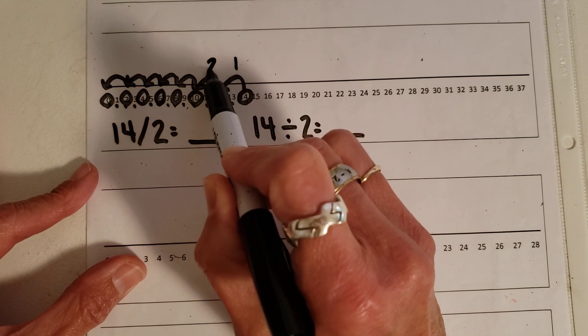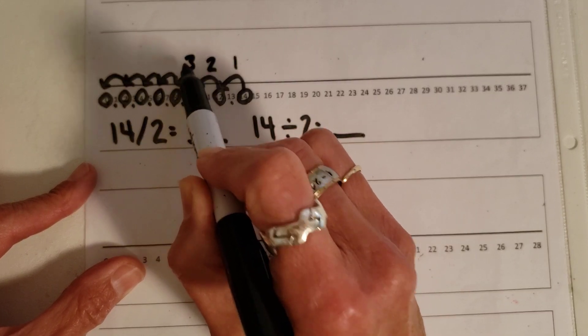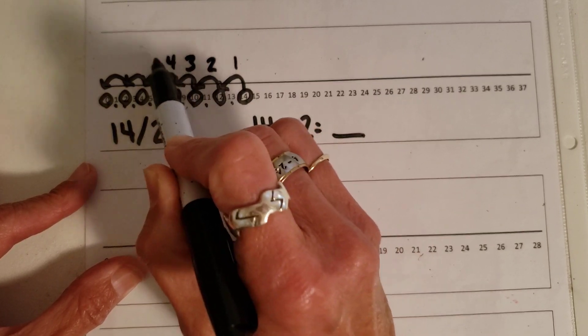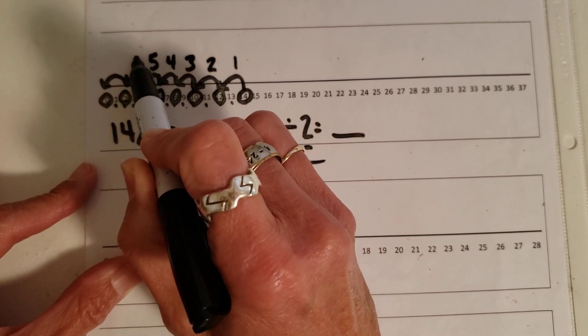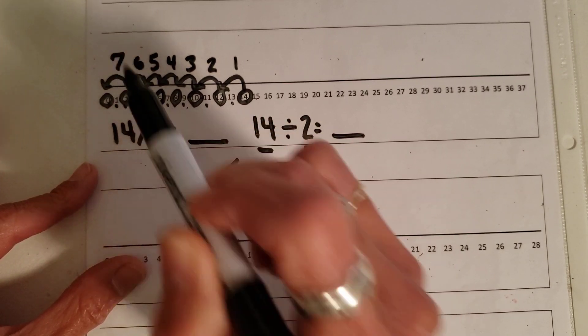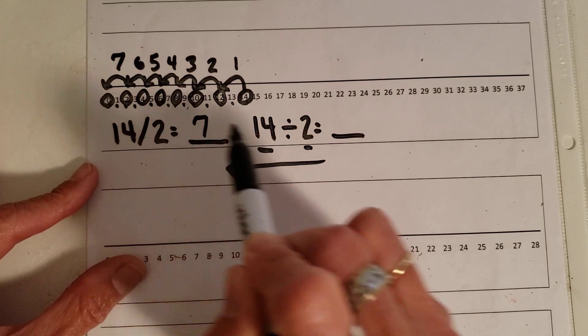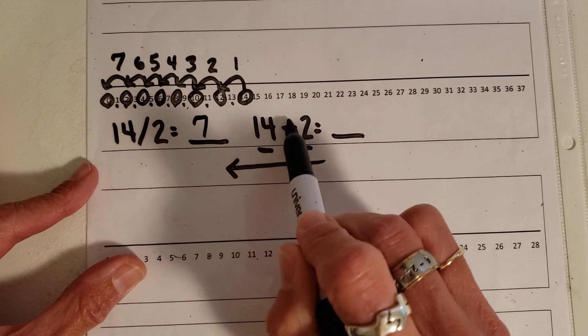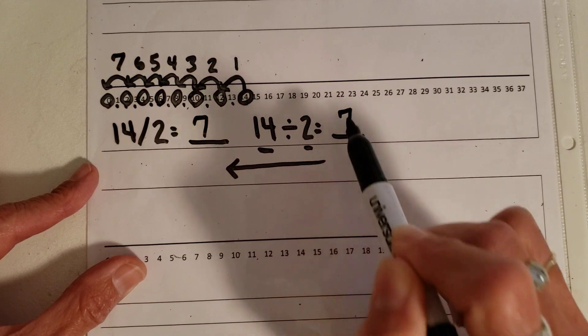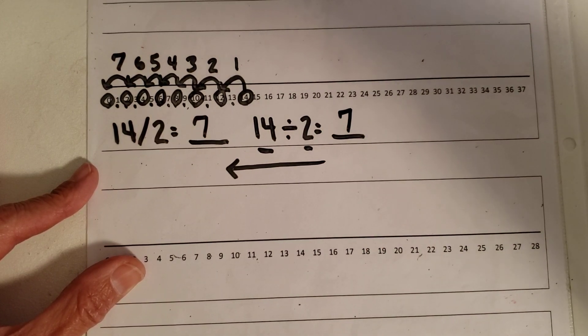This is 1 hop, 2 hops, 3 hops, 4 hops, 5 hops, 6 hops, and 7 hops. So 14 divided by 2 equals 7. Or 14 divided by 2 equals 7. They're the same thing. I hope you got that too. Thank you.